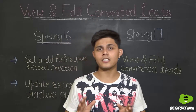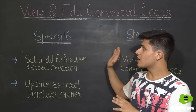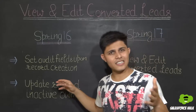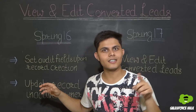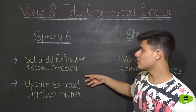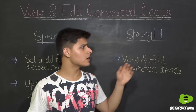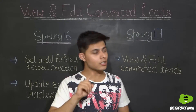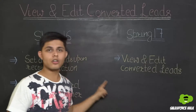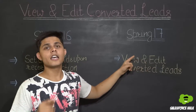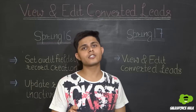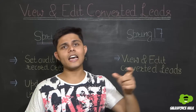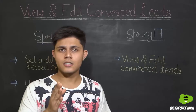So this is the basic difference. Orgs running on Spring 16 can use the older two permissions to allow converting a lead. But if running on Spring 17, those permissions will not work — you need to give the new View and Edit Converted Leads permission on the profile or on the permission set in order to give the user that access. This is how we do it.